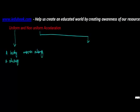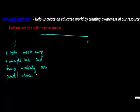Let's understand about uniform and non-uniform acceleration. Now, uniform acceleration takes place when a body moves along a straight line and change in velocity over period or interval of time is equal.